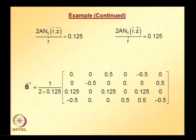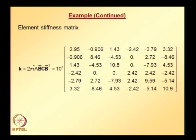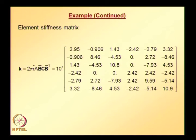Finally, the B matrix evaluated at the centroid is obtained. Using this, we can easily get the element stiffness matrix. This one-point centroid evaluation is used because the applied traction is uniform. If a more accurate evaluation of the stiffness matrix is desired, one can use the numerical integration scheme discussed earlier, rather than the one-point rule.